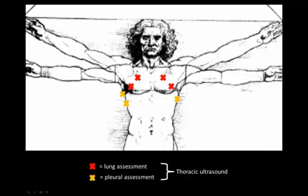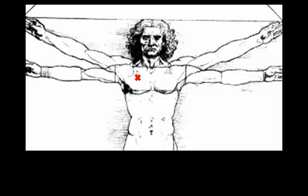Of course, you would continue on and do this on the left side of the patient as well, and that would represent a complete thoracic ultrasound. So let's review these views one by one. The first was the anterior chest wall view, in this case the right anterior chest wall, or RACW. We must label our views on the machine, because lung ultrasound views often don't possess any lateralizing anatomy that tells you what side of the patient is being examined.